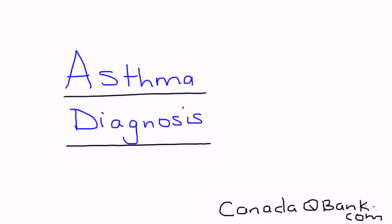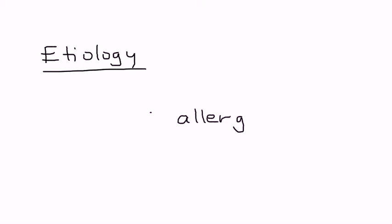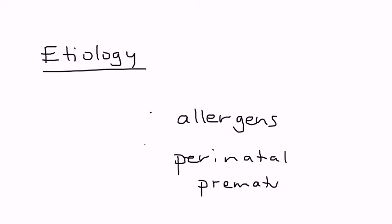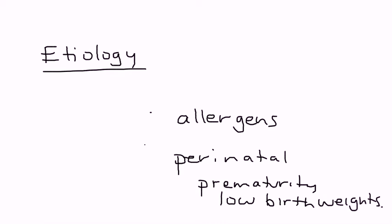Asthma diagnosis is the topic. Asthma can occur because of a wide variety of causes. Some of the more common include allergens and perinatal factors such as prematurity and low birth weight, and there are a lot of other reasons as well, including environmental causes.